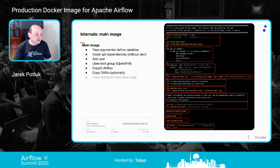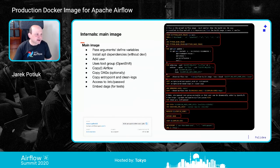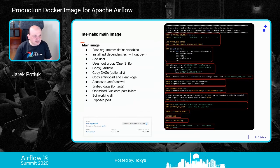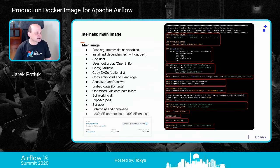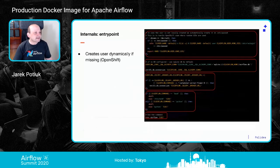We copy some scripts, and importantly, we copy the '~/.local' Airflow installation from the build image into the final image's home directory — transplanting all the installed Airflow from the build stage to the final image, taking only Airflow and nothing else. That's what makes the optimization work. Optionally we can copy DAGs, mostly for testing. We also copy the entry point and cleanup scripts, embed test DAGs, optimize Gunicorn for parallelism, expose ports, set the user, and use 'tini' for proper signal handling.